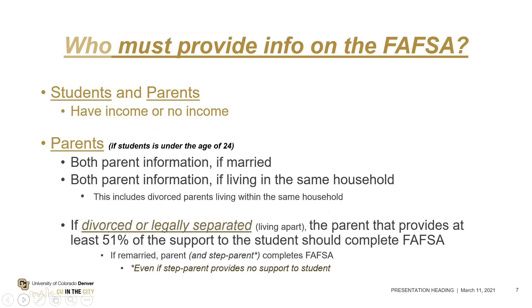Who must provide their information on the FAFSA? The student and at least one parent, regardless of whether you're working or not. All parents are required to provide information on the FAFSA for students up to the age of 24, because all students under 24 are considered dependent for federal student aid purposes only — we don't care who claimed the student on their taxes. Both parents, if married, would provide their information on the FAFSA. If parents are divorced but living in the same household, both parents would still provide their information.